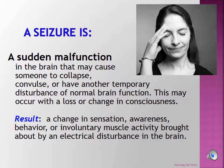Seizures occur when the electrical system of the brain malfunctions. Instead of discharging electrical energy in a controlled manner, the brain cells keep firing. This malfunction can cause someone to collapse, convulse, or have another temporary disturbance of normal brain function. Not all seizures result in loss of consciousness. Some seizures may result in a change to a person's sense of sensation, awareness, or behavior.